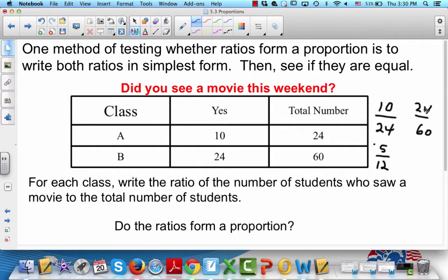Over here, both are divisible by 12. 24 divided by 12 is 2, and 60 divided by 12 is 5. So let's look at these: 5 twelfths, 2 fifths. Are those equal to each other? No, they're not. So these don't form a proportion.